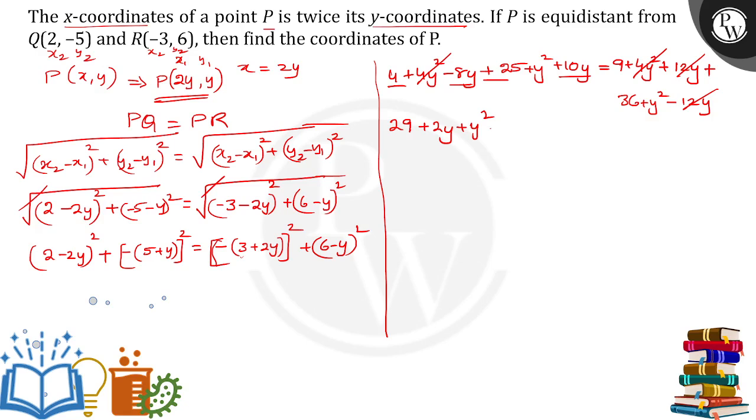We're transposing all the values from RHS to LHS. Plus 9 will become minus 9, then minus 36 minus y² is equal to 0. y² and y² will get cancelled. 29 - 9 - 36 is 20 - 36. 2y - 16 = 0, 2y = 16, then y = 16/2, therefore y is equal to 8.